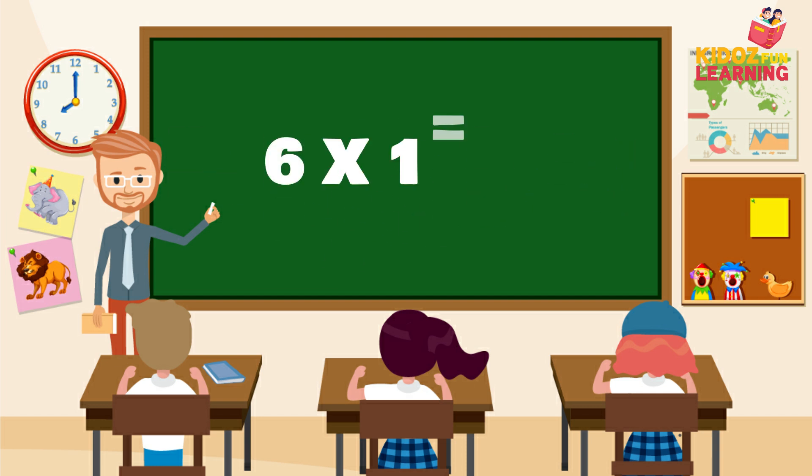6 ones are 6, 6 twos are 12, 6 threes are 18, 6 fours are 24, 6 fives are 30.